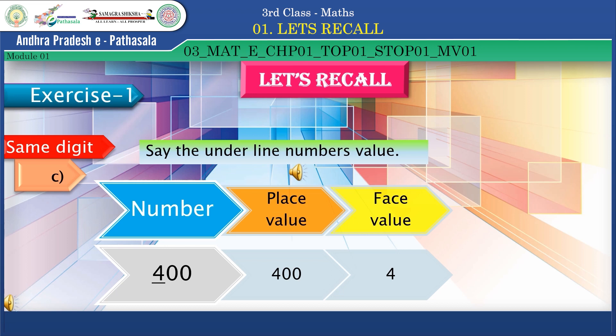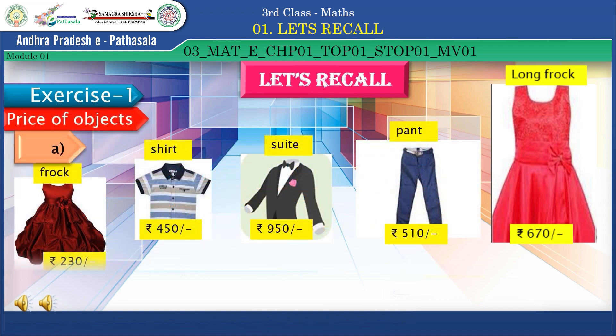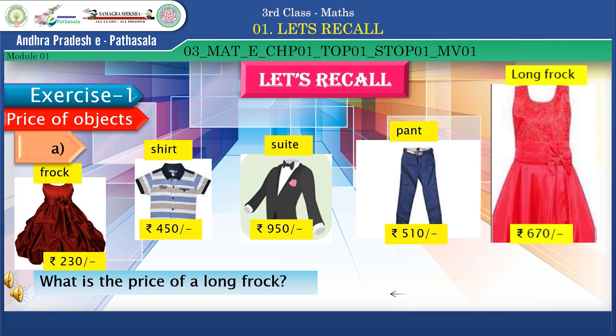Here some objects are there — observe and fill in the blanks. Frock is 230 rupees, shirt is 450 rupees, suit is 950 rupees, panty is 510 rupees, long frock is 670 rupees. What is the price of the long frock? Yes, 670 rupees is the right answer.